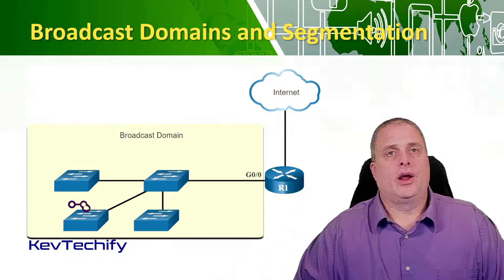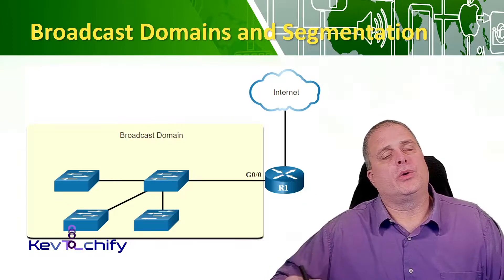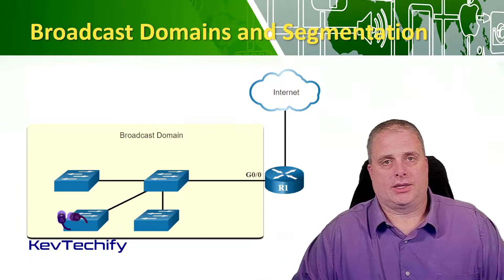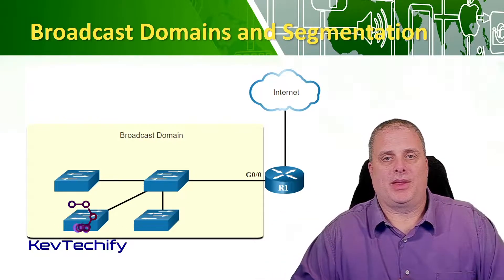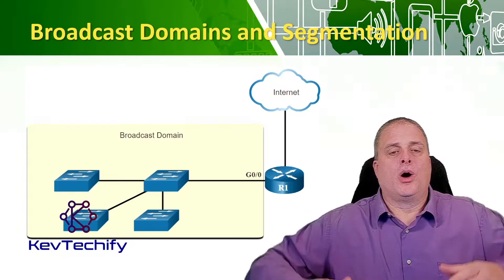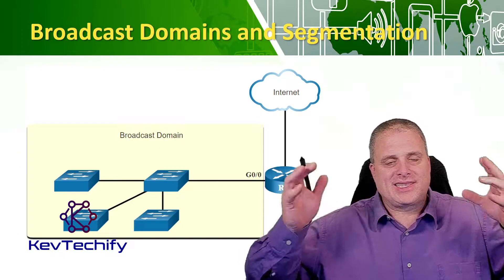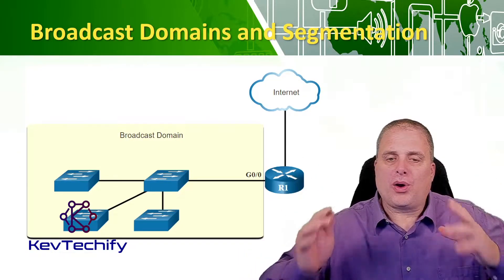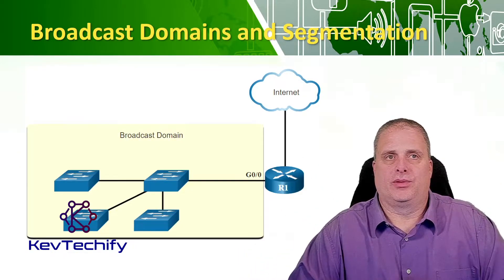Routers, on the other hand, don't forward broadcasts. They stop them. Broadcasts stop at routers and are not propagated through.